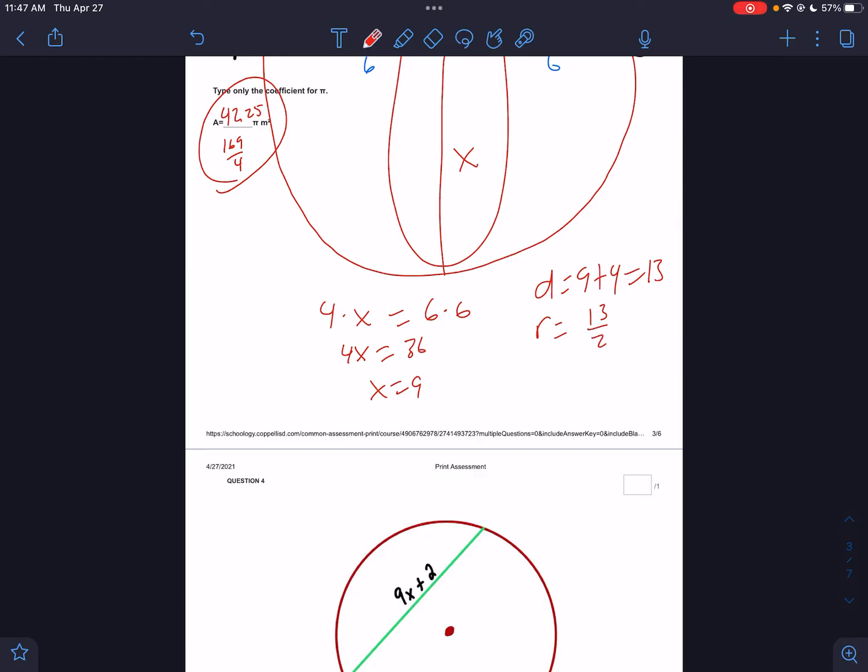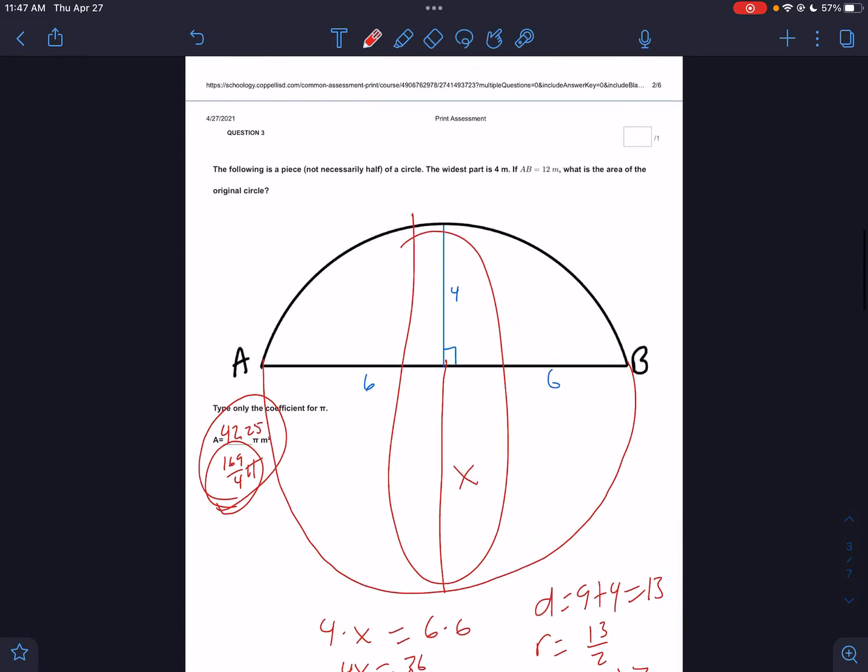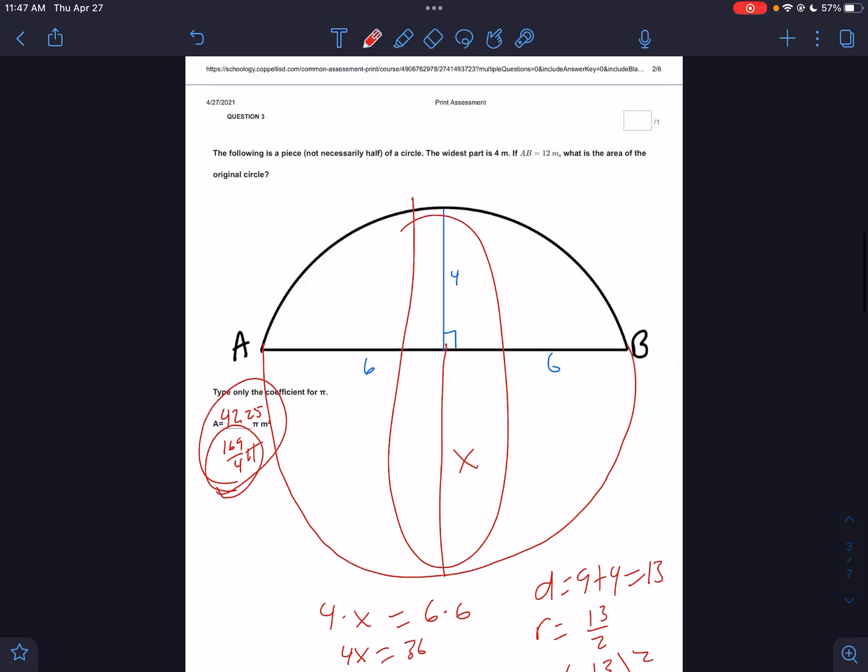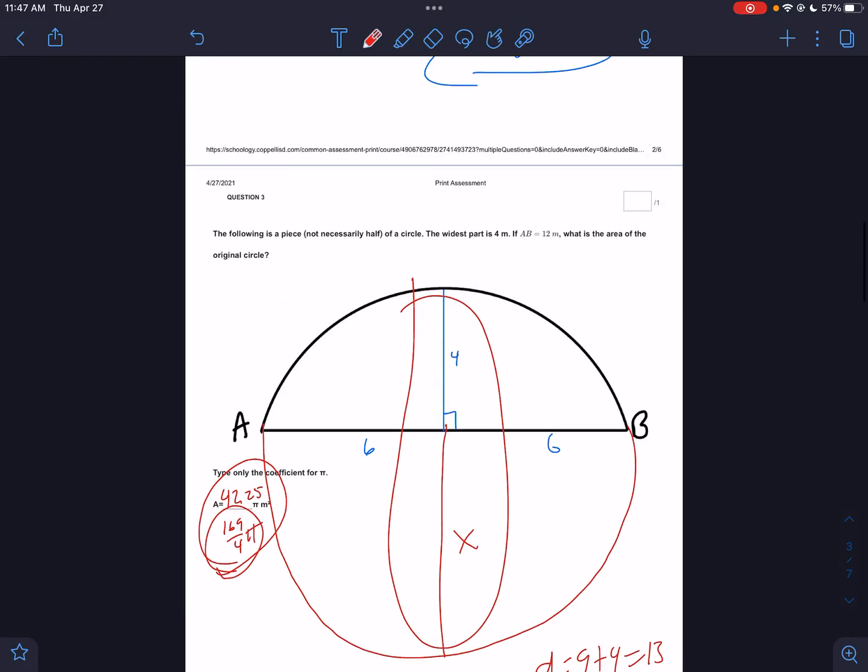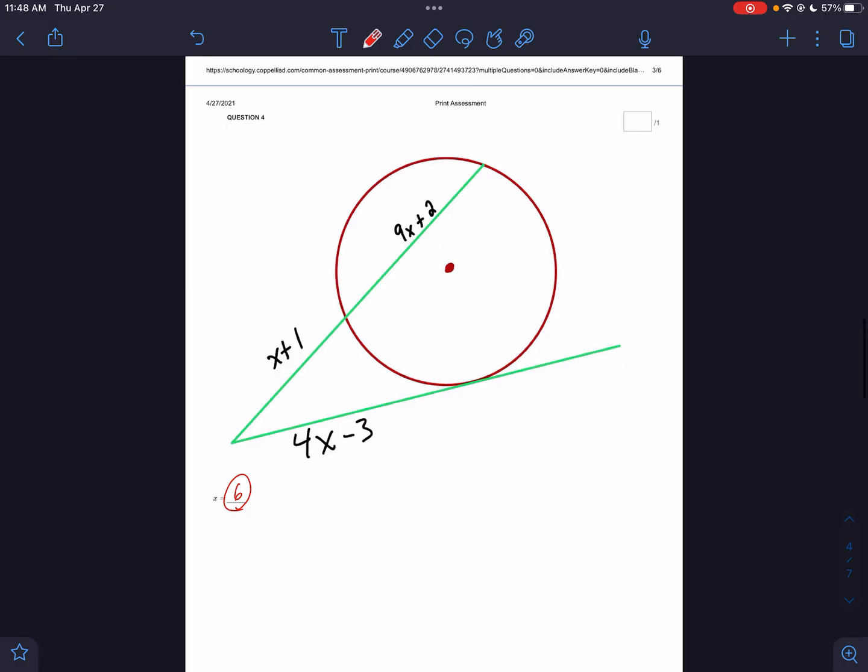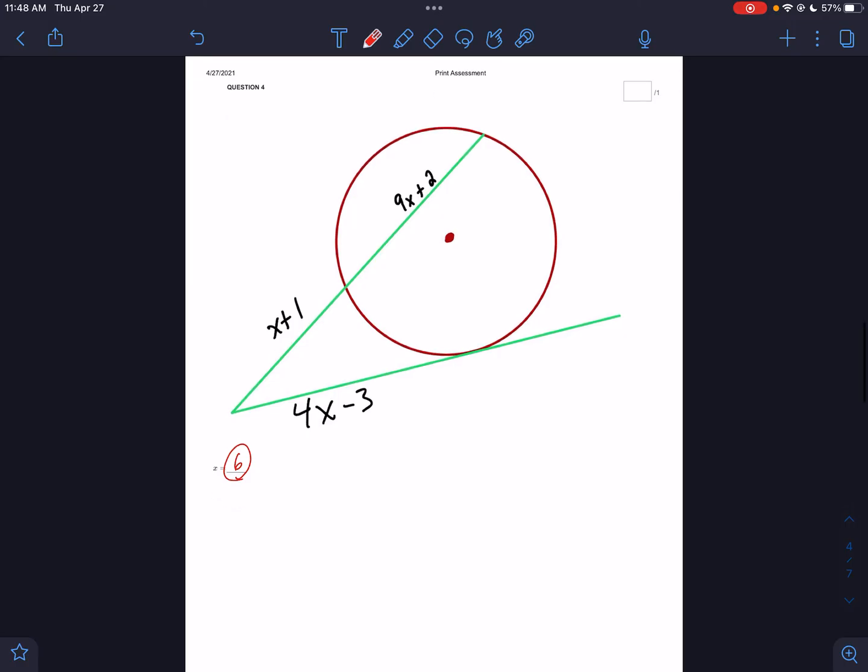So the diameter equals 9 plus 4, that's 13. The radius would be 13/2. The area would be π times (13/2)² and that's going to be 169/4 π. It says we can type as a fraction—type only the coefficient. I need to make sure it's set up to do that.